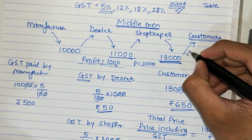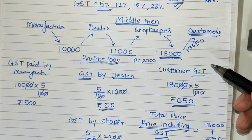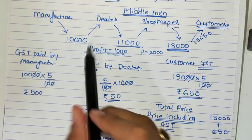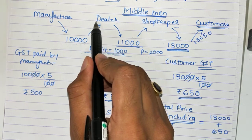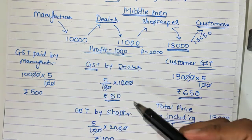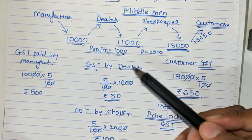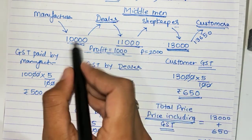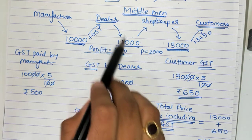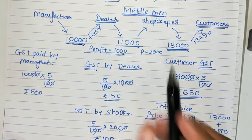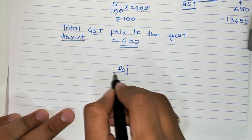The customer bought the item at Rs. 13,650 because GST was added. Now if the exam asks what price the dealer paid to the manufacturer including GST: manufacturer said Rs. 10,000, so on every transaction when the manufacturer sells to the dealer, GST is added. So the dealer pays 10,000 plus GST. I am a dealer - I buy the product from the manufacturer.